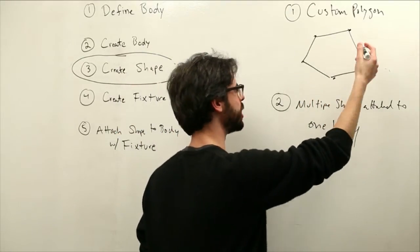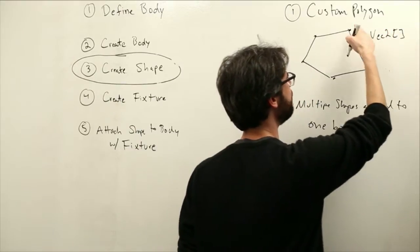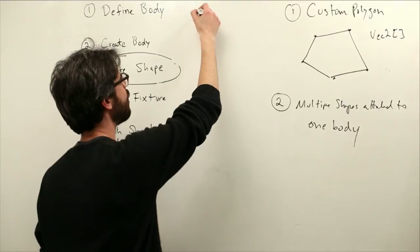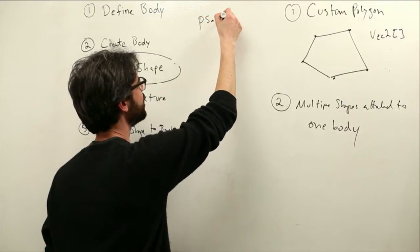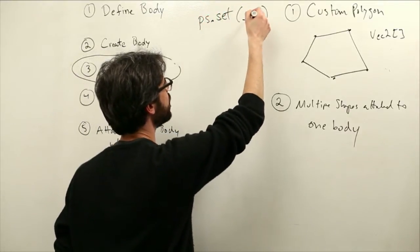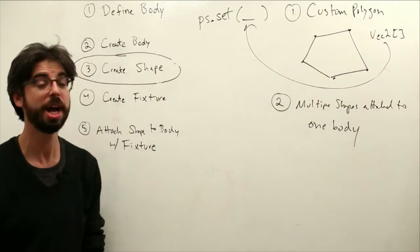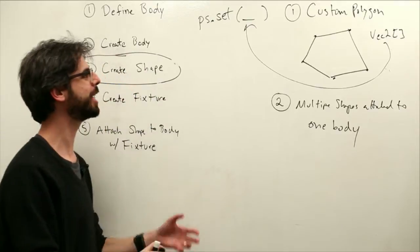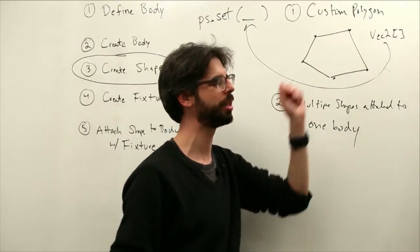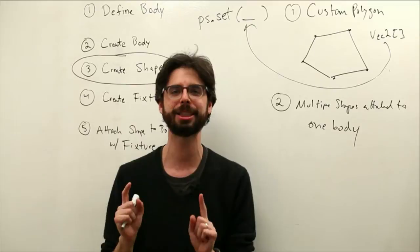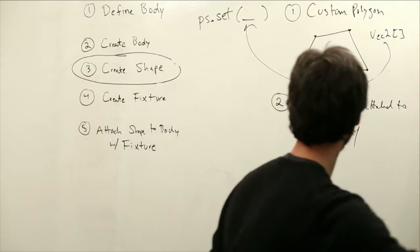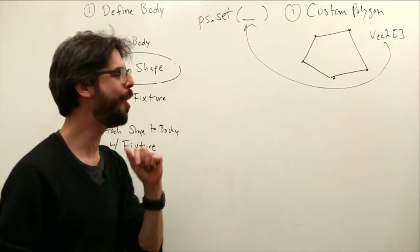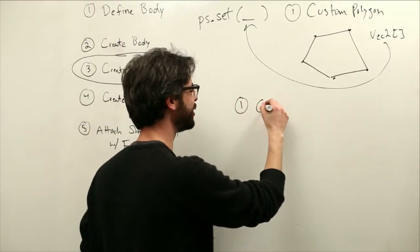And we're going to use the same exact method. We can create an array of vec2 objects all with these locations and the polygon shape has a very simple function called set where we can pass that array in. So before we said set as box, we give it a width and a height. Now we're just saying set the vertices according to this array of vertices. Now there's two important aspects of this, and I guess I'll just erase this down here and come back to this in a moment, that we need to remember. One is convex shapes only. I hope this is still true in Box2D. Stuff kind of changes sometimes.